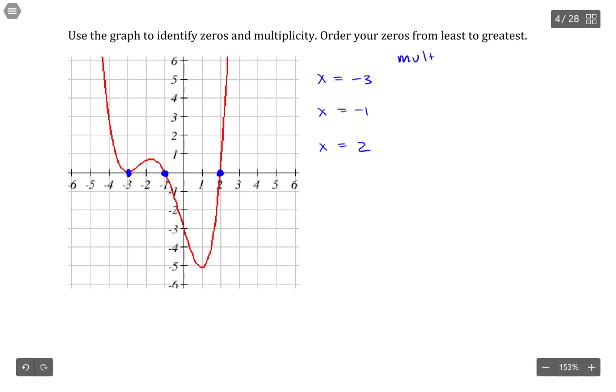Now multiplicity. Multiplicity is identifiable through the graph by identifying what's happening around that point.